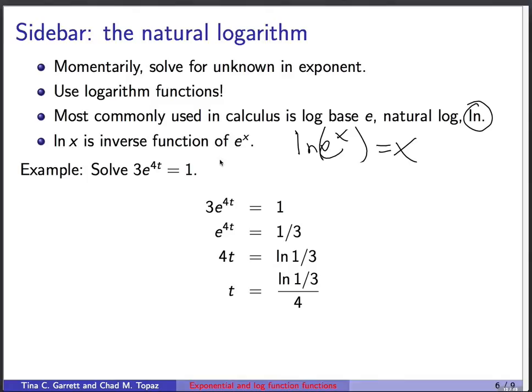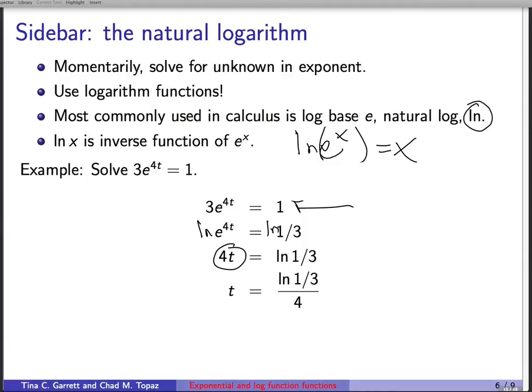So to do a very quick example, if we would like to solve 3e^(4t) = 1 for the unknown t that's stuck up in the exponent, we can start off with that equation. We can divide each side by 3 to get this equation here. And then we're going to take the natural log of each side. So natural log of e^(4t) is natural log of 1/3. Since natural log and exponentiation are inverse functions, on the left-hand side, I just get 4t. On the right-hand side, I get natural log of 1/3. We can divide by 4 to find that t = ln(1/3) over 4. That's how we use natural log.